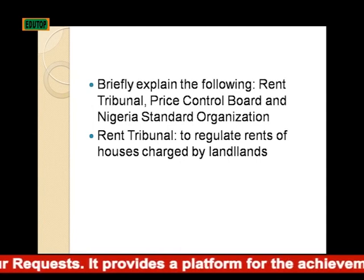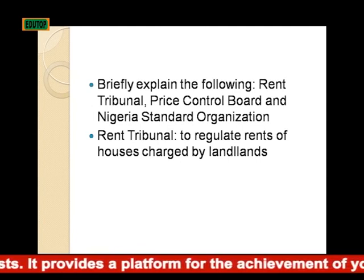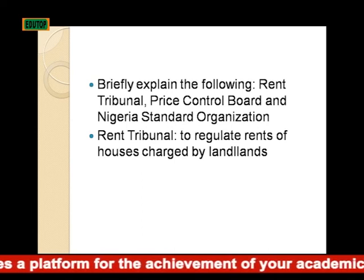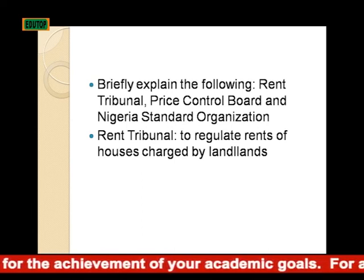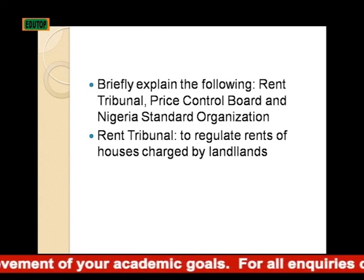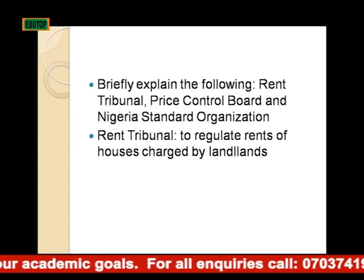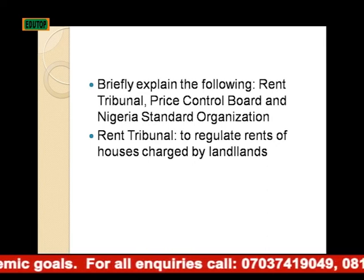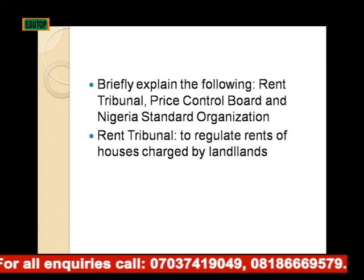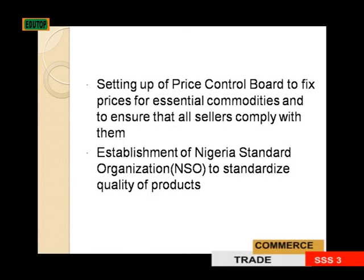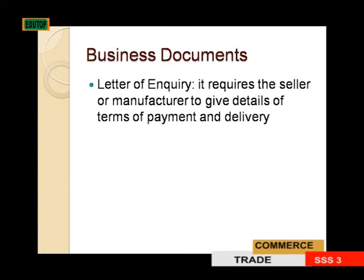Briefly explain the following: Rent Tribunal, Price and Income Board, Price Control, and Nigeria Standard Organization. Rent Tribunal regulates rents of houses charged by land owners. Price Control Board fixes prices for essential commodities and ensures that all sellers comply with them. Nigeria Standard Organization standardizes the quality of products.